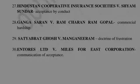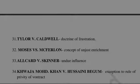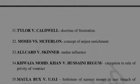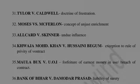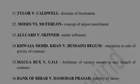Case thirty, Entores Limited versus Miles Far East Corporation, is about communication of acceptance. Case thirty-one, Taylor versus Caldwell, is also about the doctrine of frustration. Case thirty-two, Moses versus McFarlane, deals with unjust enrichment or quasi-contract. Case thirty-three, Elkhart versus Skinner, is about undue influence. Case thirty-four, Khwaja Muhammad Khan versus Hussaini Begum, is about an exception to the rule of privity of contract. Case thirty-five, Mawla Books versus Union of India, is about forfeiture of earnest money and breach of contract. Case thirty-six, Bank of Bihar versus Damodar Prasad, is about liability of surety.